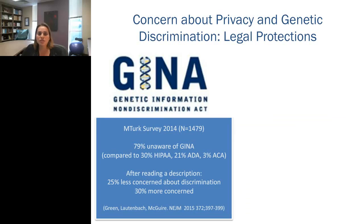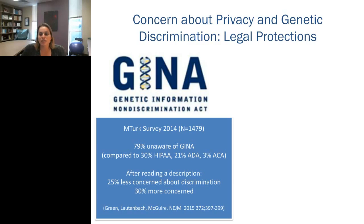With regard to privacy and genetic discrimination, we've heard a lot of concern over the years from the public about potential genetic discrimination. We haven't seen too many documented cases of egregious genetic discrimination, but we have a lot of anecdotal evidence that it happens. In the United States, we passed a federal law in 2008 called the Genetic Information Non-Discrimination Act, which protects against genetic discrimination in the context of health insurance and employment. However, it is not a comprehensive protection — individuals can still be discriminated against in life insurance, long-term care, disability, and other contexts.